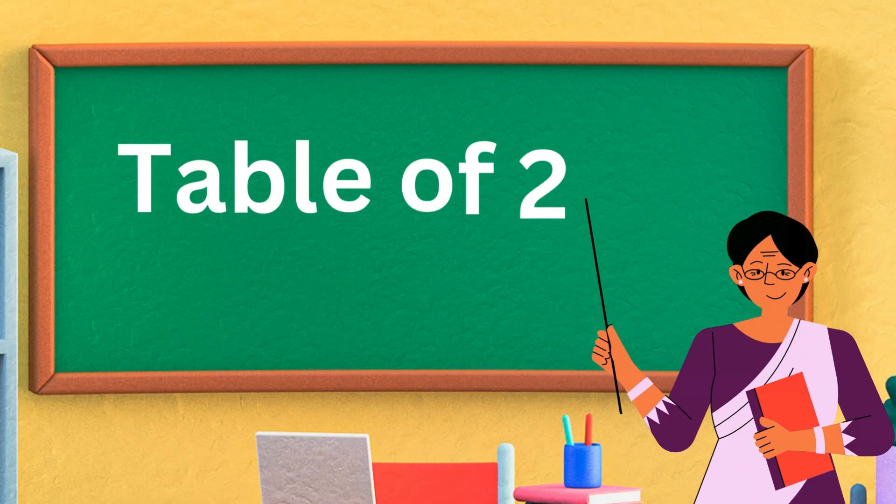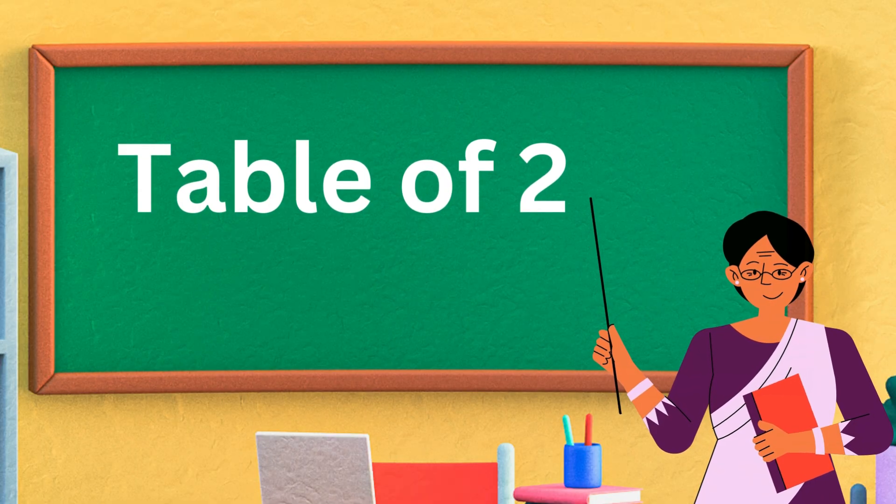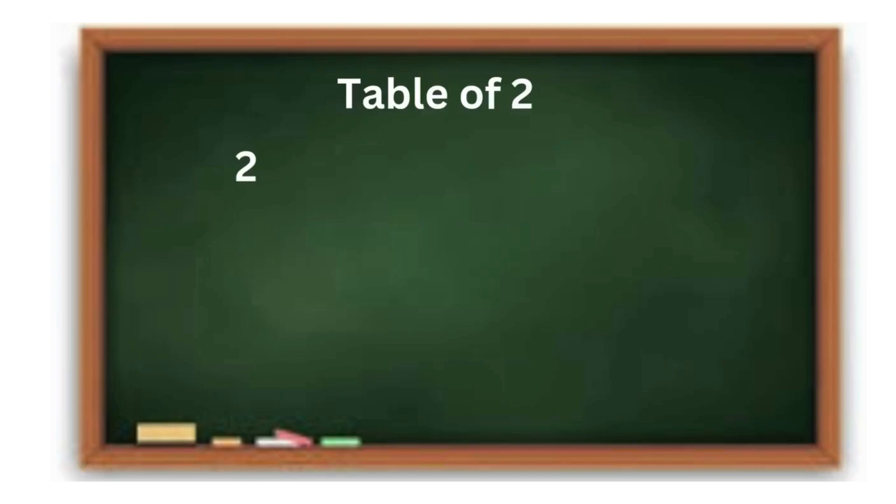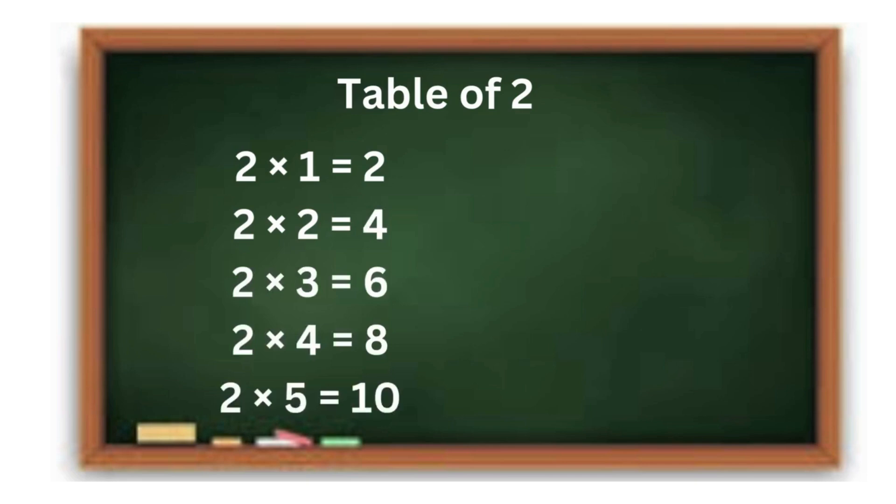Let's start with the table of 2. It's like counting by 2s. 2 times 1 is 2. 2 times 2 is 4. 2 times 3 is 6. 2 times 4 is 8. 2 times 5 is 10.